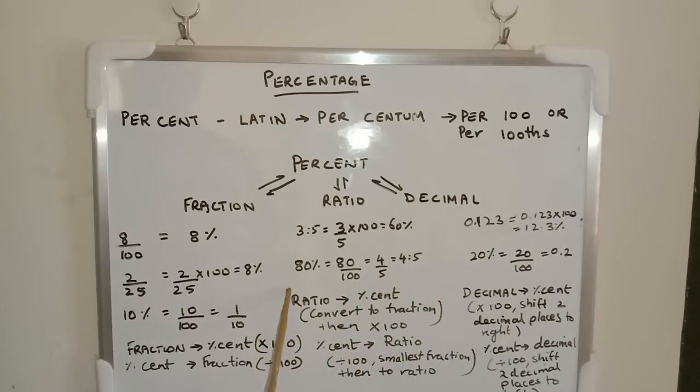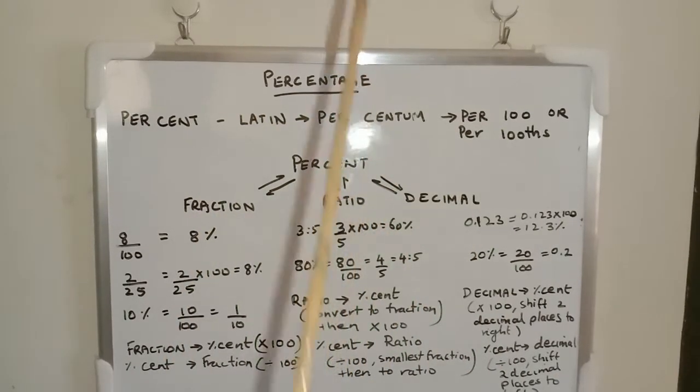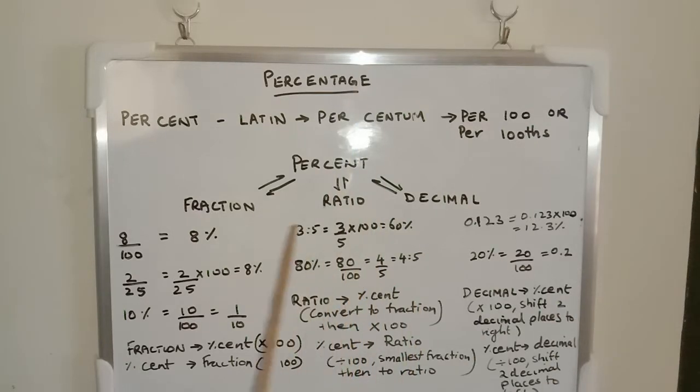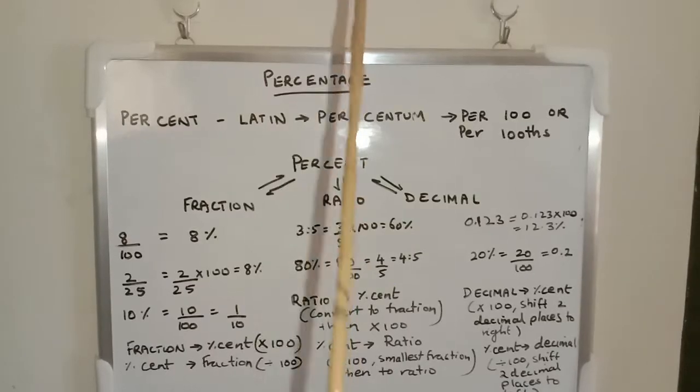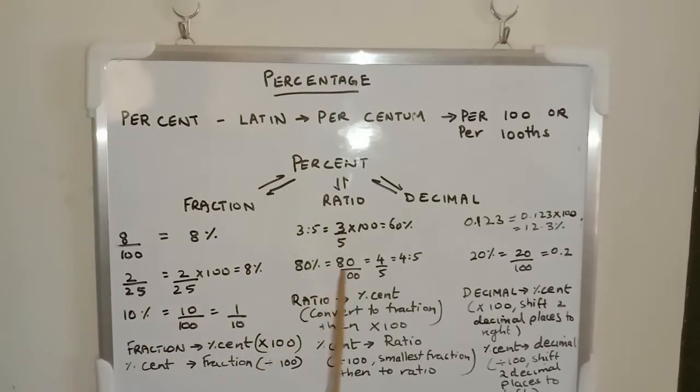Example: 80% equals 80/100. That equals 4/5. You cut the zeros, that will be 8/10. If you divide 8 and 10 by 2, it will be 4/5. Now you write this as 4:5.